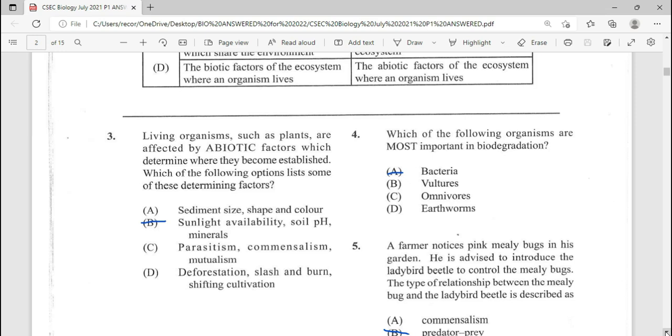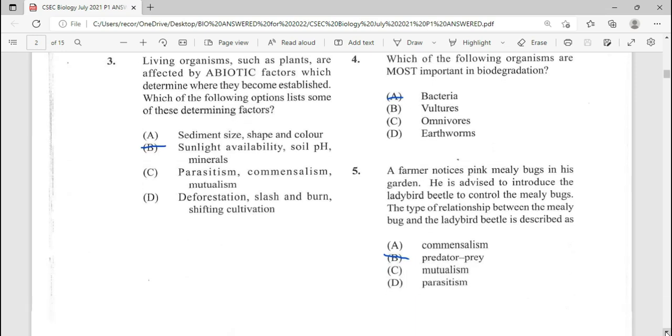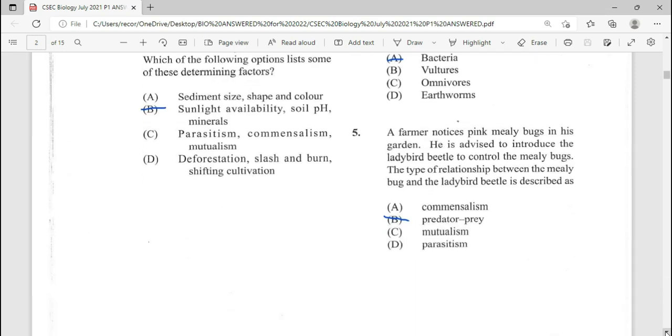Number four, which of the following organisms are most important in biodegradation? Answer there is going to be A. Number five, a farmer noticed pink mealybug in his garden. He is advised to introduce the ladybird beetle to control mealybugs. The type of relationship between the mealybug and the ladybird beetle is described as B, predatory relationship.